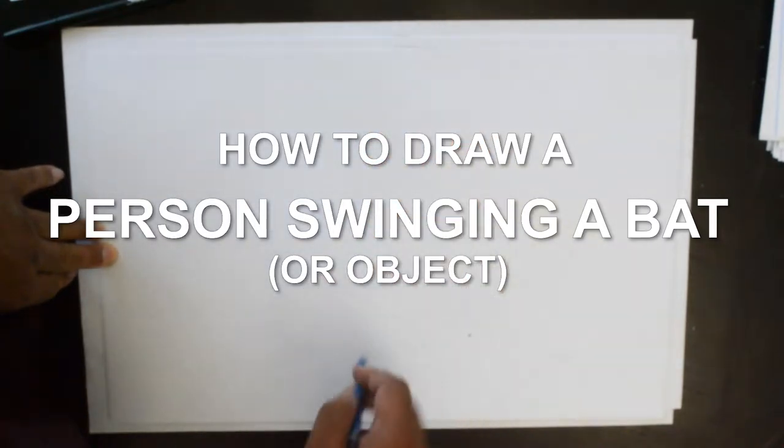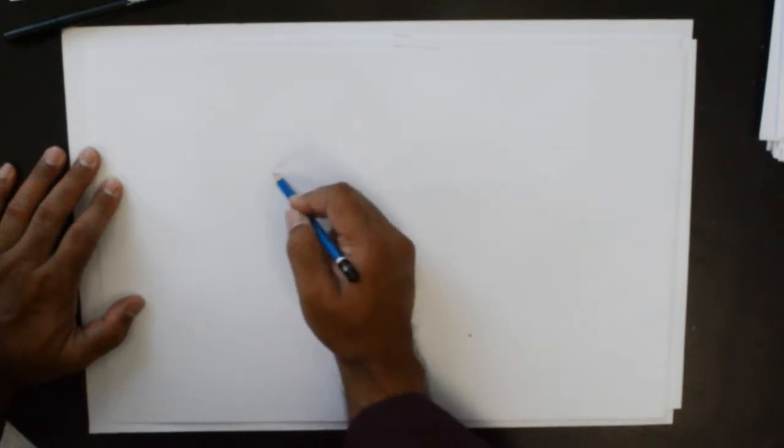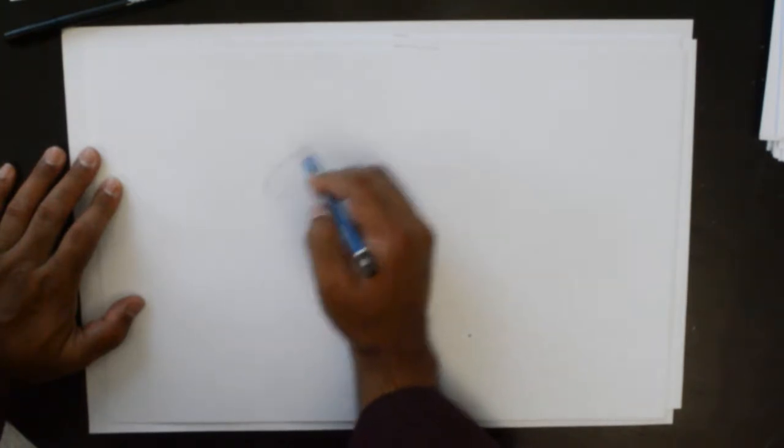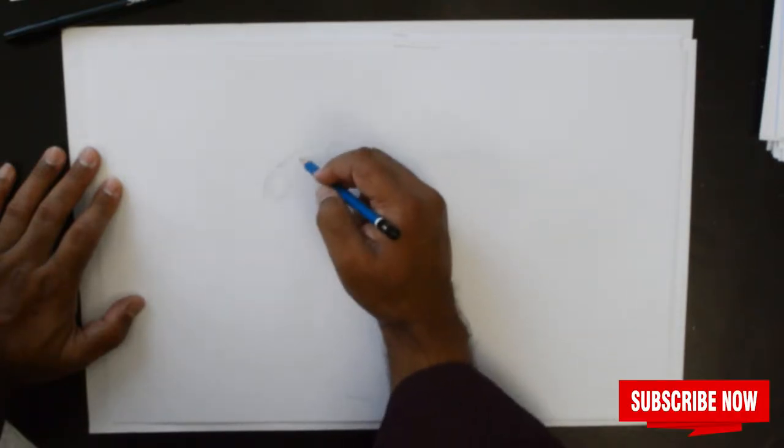Hello everybody, thank you for joining us. Today we are going to draw a person swinging a bat. And we have explored this action in other videos as well, so please do feel free to check them out as well. But we are here utilizing one different angle and an important angle in this particular action.